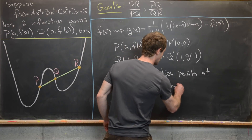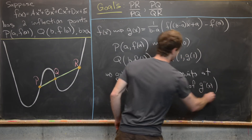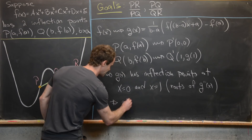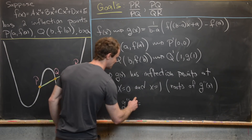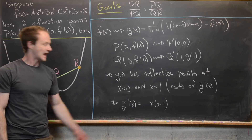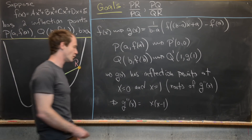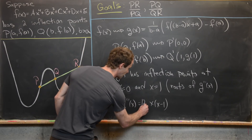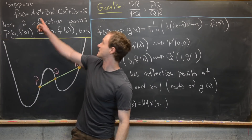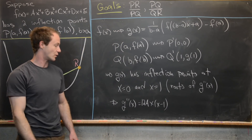Since inflection points are roots of the second derivative, we can factor G″(x) as a product of x and (x − 1). Keeping the leading coefficient arbitrary and setting it to 12A — since differentiating Ax⁴ twice gives a 12A·x² term — we write G″(x) = 12A · x(x − 1).